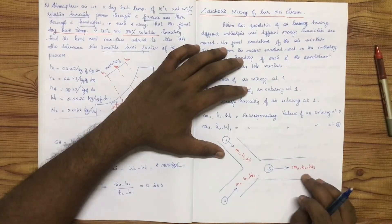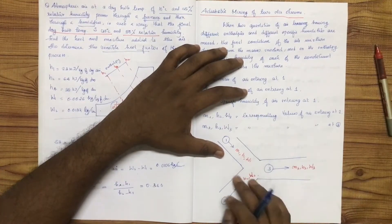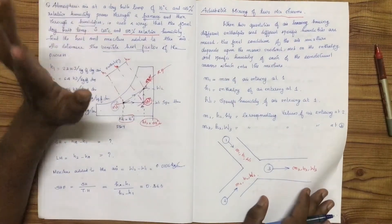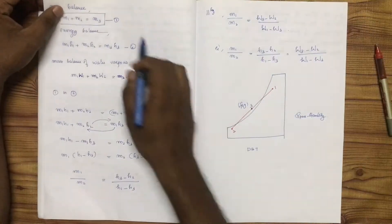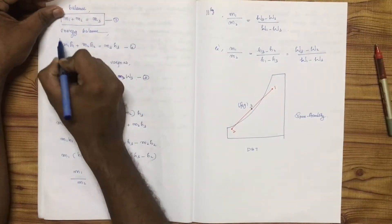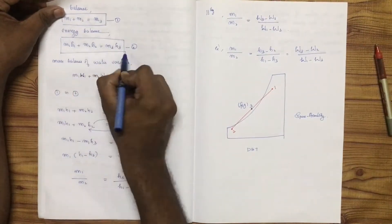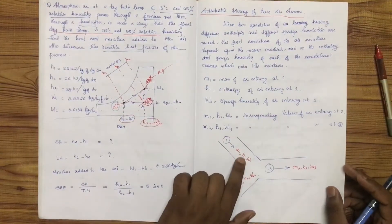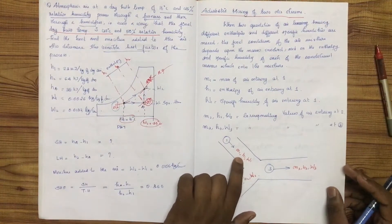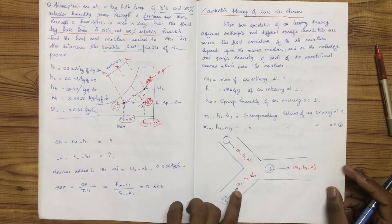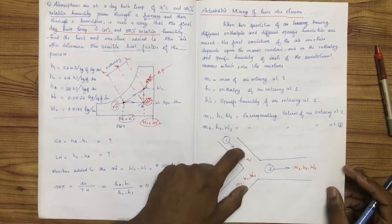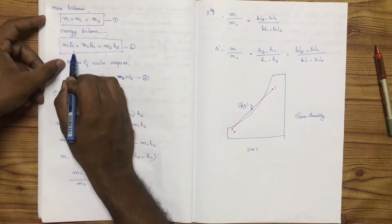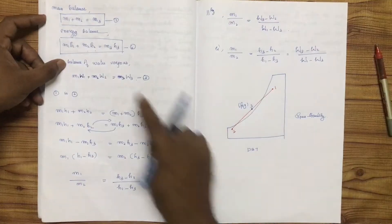After mixing, the enthalpy becomes H3, and the specific humidity becomes W3. For energy balance — enthalpy in kJ per kg — the total energy gives us: M1 into H1 plus M2 into H2 is equal to M3 into H3. This is the energy balance equation.